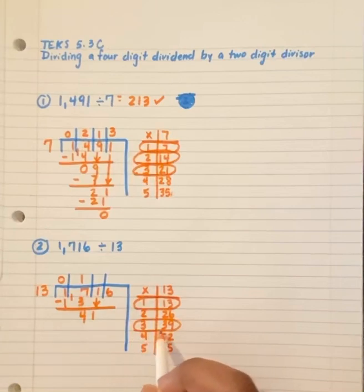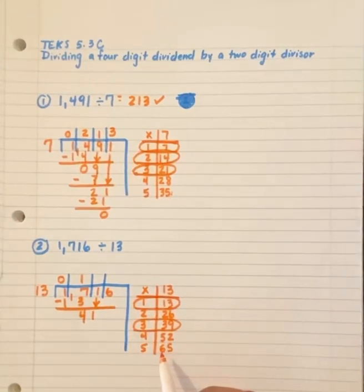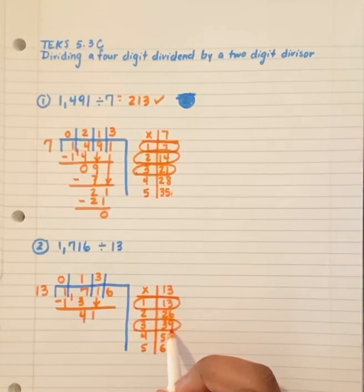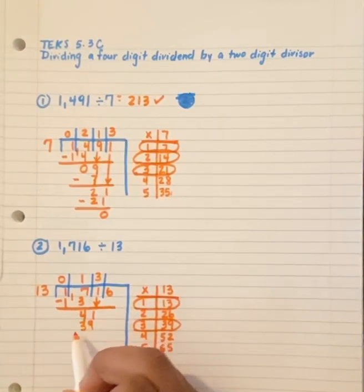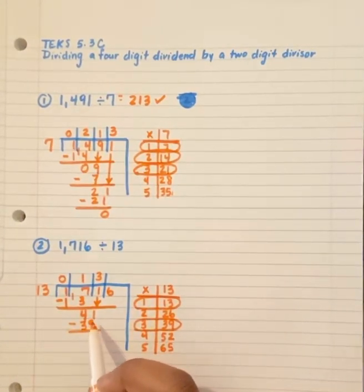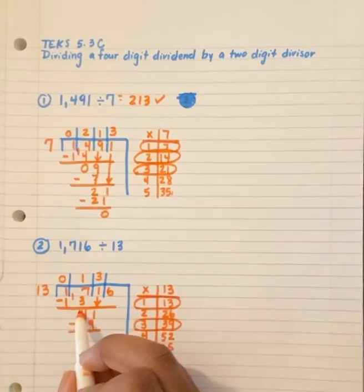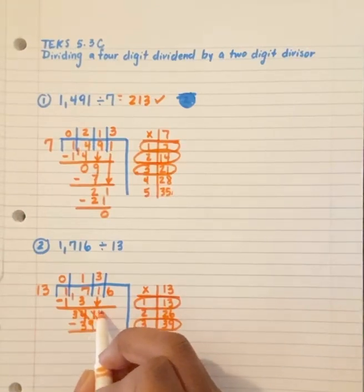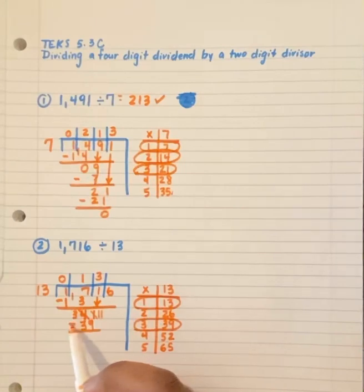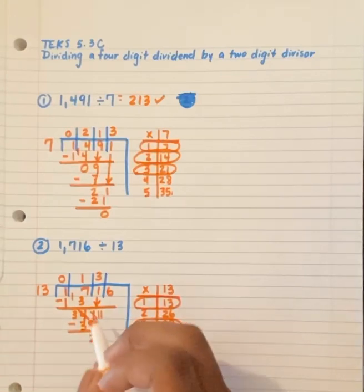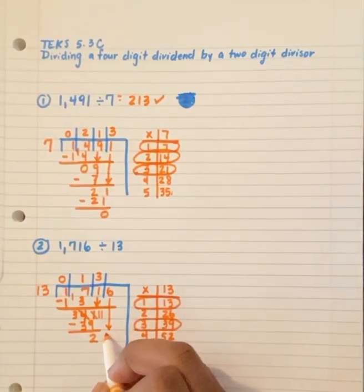Notice, guys, I keep circling both numbers. I'm not circling just 39. I'm circling both numbers. The 3 goes above the 1. The 39 goes below 41. Subtract. I cannot take 9 from 1, so I must regroup. The 4 turns to 3. And the 1 turns to 11. 11 minus 9 equals 2. We know 3 minus 3 equals 0. And again, I bring down my number.